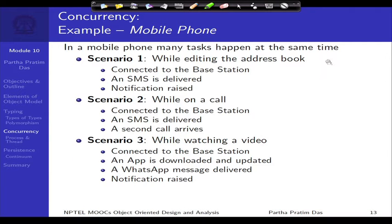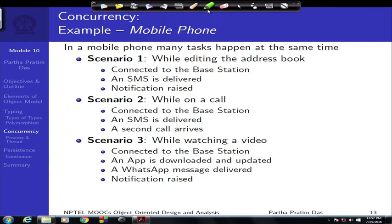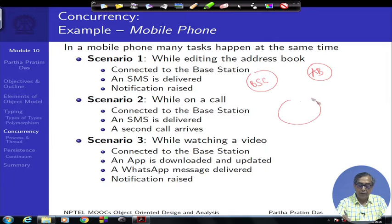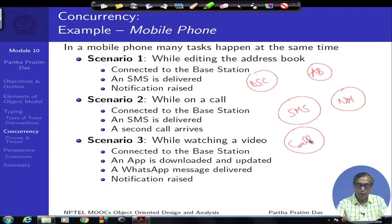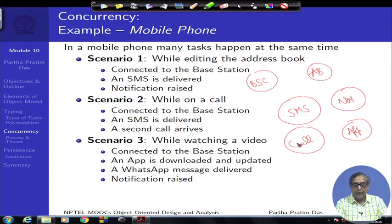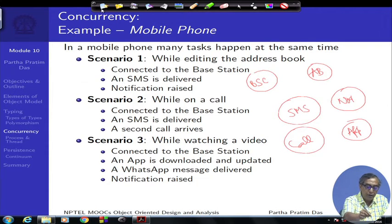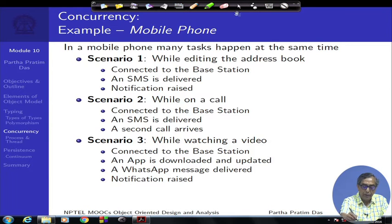If we think about all of these — the address book as an object, the base station connector as an object, SMS as an object, notification as an object, a call as an object, an app as an object — they all need to interact, exist, and work at the same time domain. That is the basic notion of concurrency we need to work with.